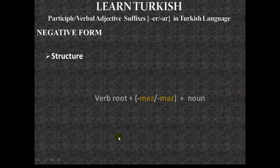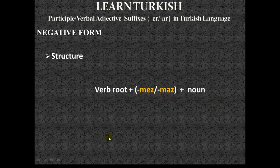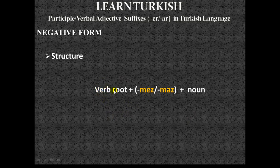Now let's see the structure of the negative form. Again, there is the verb root, but as different from the affirmative form, this time we add the suffixes -mez or -maz instead of -er or -ar. Next is the noun which will be described by the verbal adjective. This gives the sense of negativity.